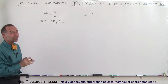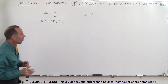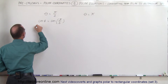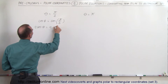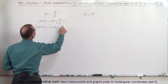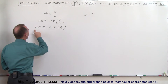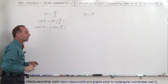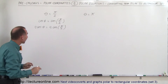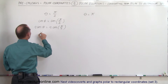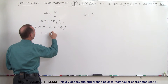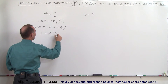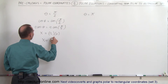Now let's multiply both sides of the equation by r and see what we get. So we have r times the cosine of theta equals r times the cosine of pi over 2. Now r times the cosine of theta equals x, so we can convert this to x. The cosine of pi over 2 equals 0, so this gives us r times 0, which means x equals 0.